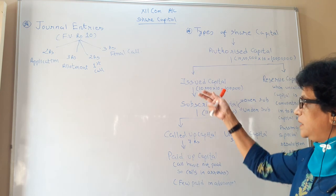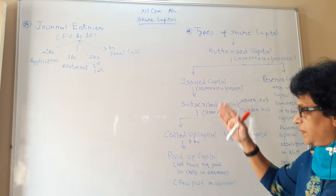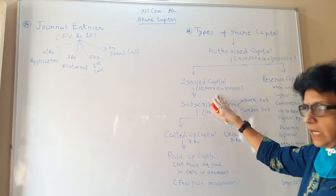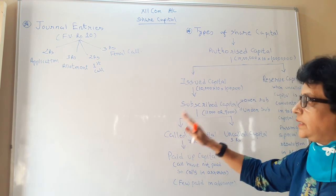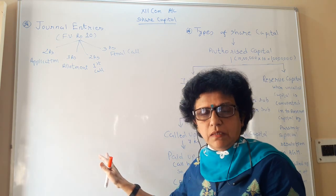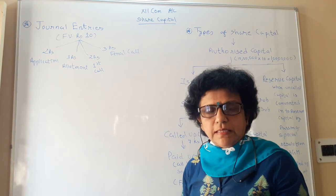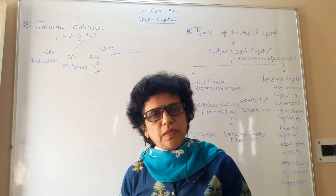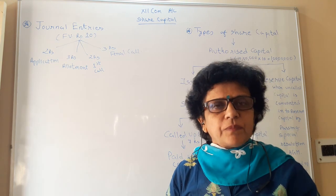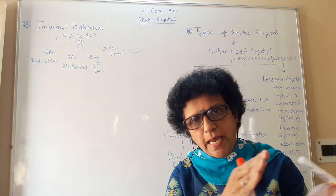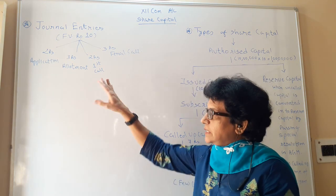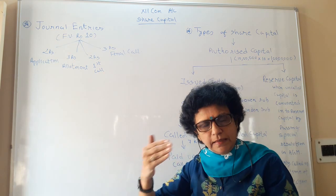This is what all the various names given to share capital mean: sometimes it is called issued capital, sometimes subscribed capital, sometimes called-up capital — step by step, depending on the situation, we identify and write the journal entry. Today let us see how the basic journals are written. The journal fundamental rules remain the same — whether it is an individual proprietorship bringing capital, we write: bank account debit to capital account credit.